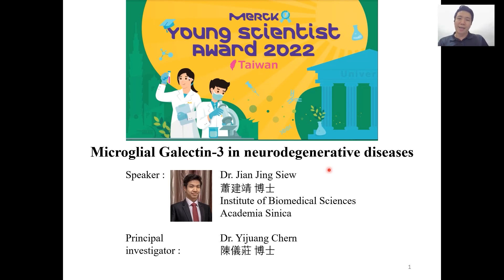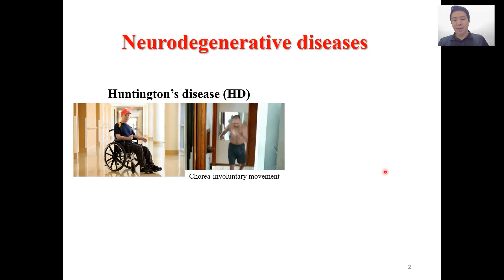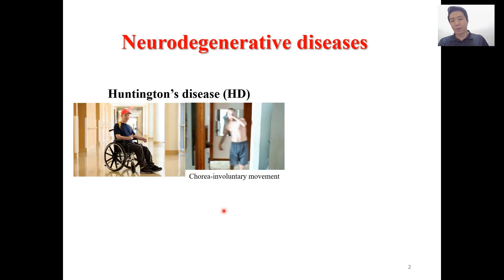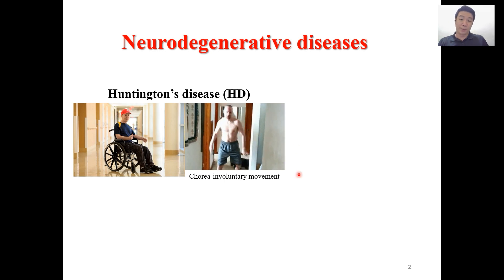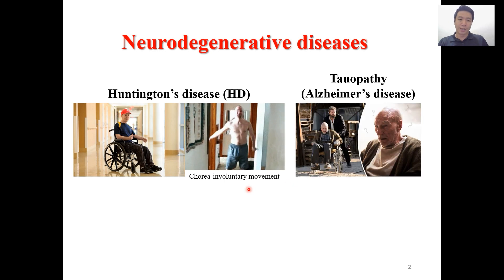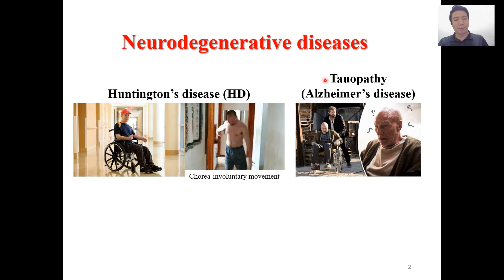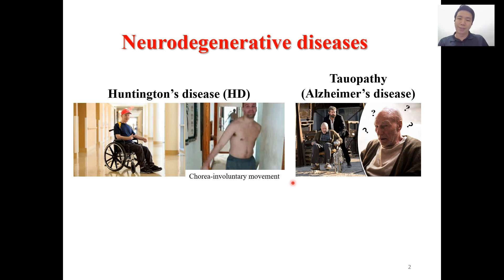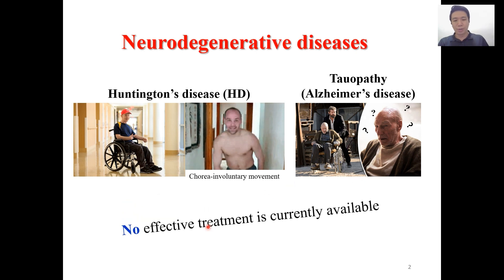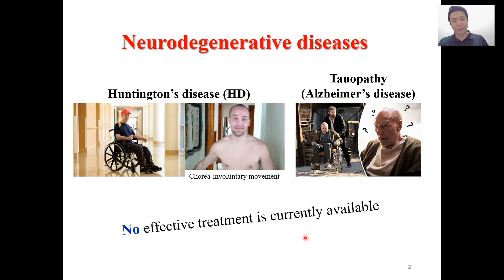My name is Siljen Jin and today I would like to share a story about microglia galectin-3 in neurodegenerative disease. I have been working on Huntington's disease, which suffers from movement disorder, as well as tauopathies such as Alzheimer's disease. Unfortunately, there are still no cure for these disorders.